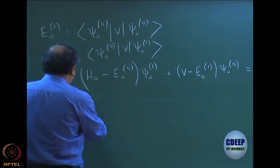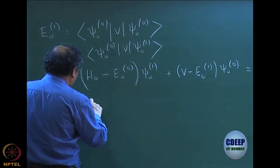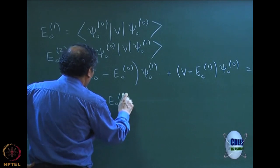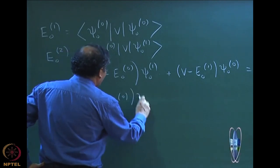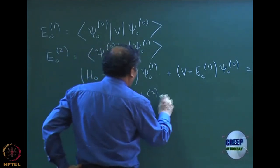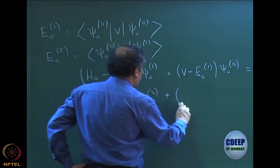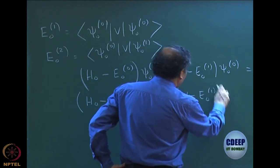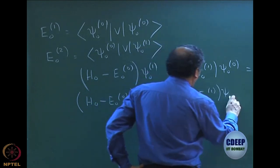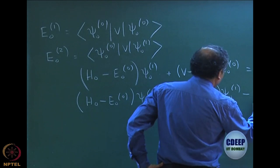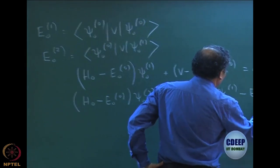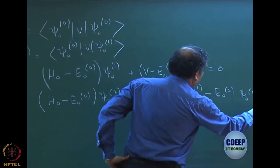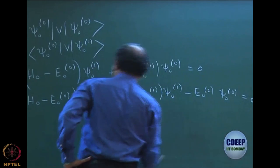The second order equation was similarly: H0 minus E00 times ψ02, plus V minus E01 times ψ01, minus E02 times ψ00, equals zero.